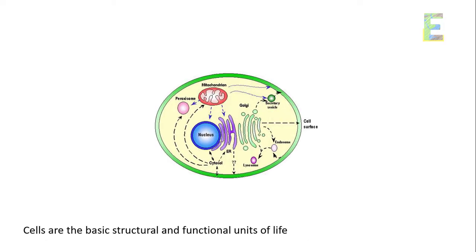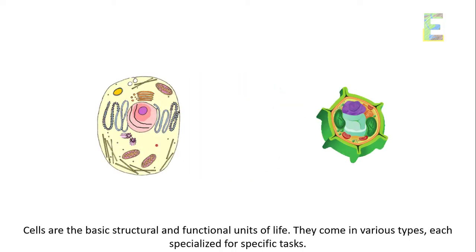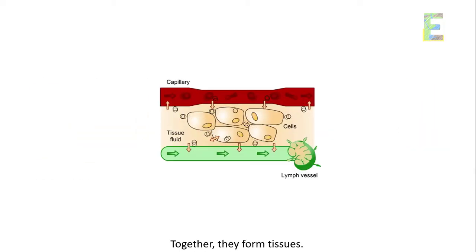The cellular level. Moving up, we reach the cellular level. Cells are the basic structural and functional units of life. They come in various types, each specialized for specific tasks. Together, they form tissues.